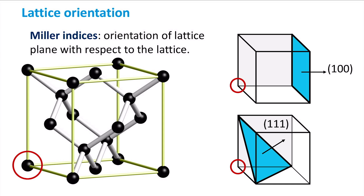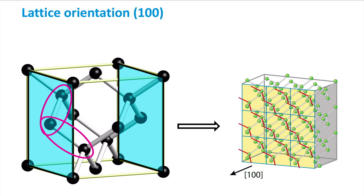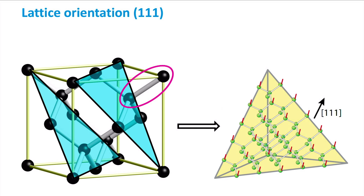These two orientations are most commonly used for crystalline silicon solar cells. The difference in lattice orientation is visible at the surface of the material. When we look at the 1-0-0 orientation, we see that each atom at the surface of the crystal is backbonded by 2 silicon atoms. As each silicon atom has 4 valence electrons, this means that this surface atom has 2 electrons that are not shared with another silicon atom. These are so-called dangling bonds, marked here in red. For the 1-1-1 orientation, we see that each atom at the surface has 1 dangling bond, and is backbonded by 3 neighboring atoms.